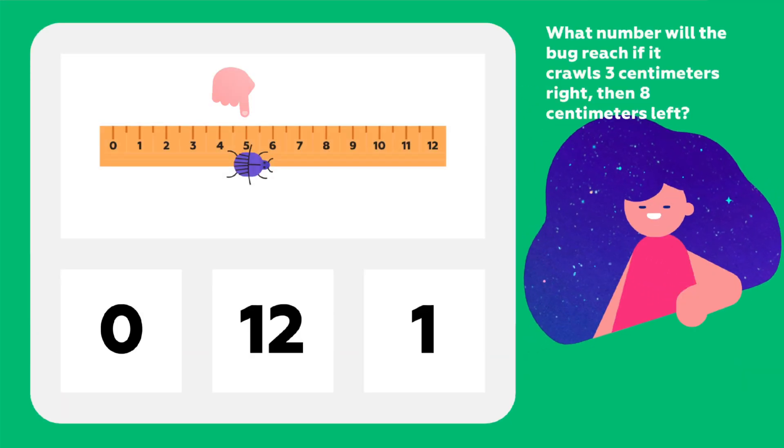What number will the bug reach if it crawls 3 centimeters right, then 8 centimeters left?